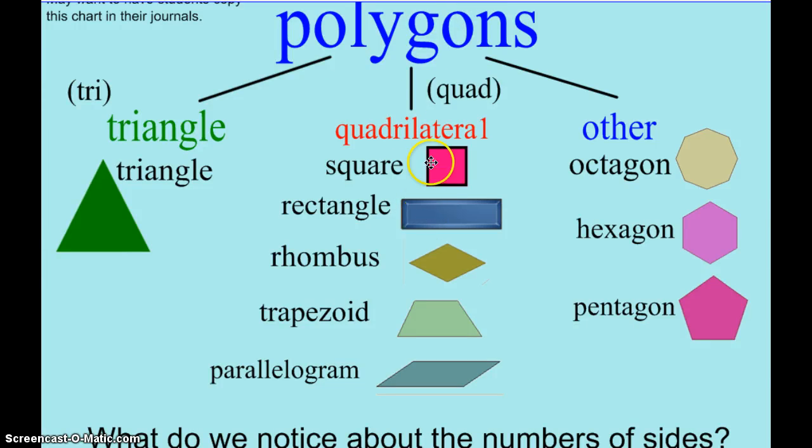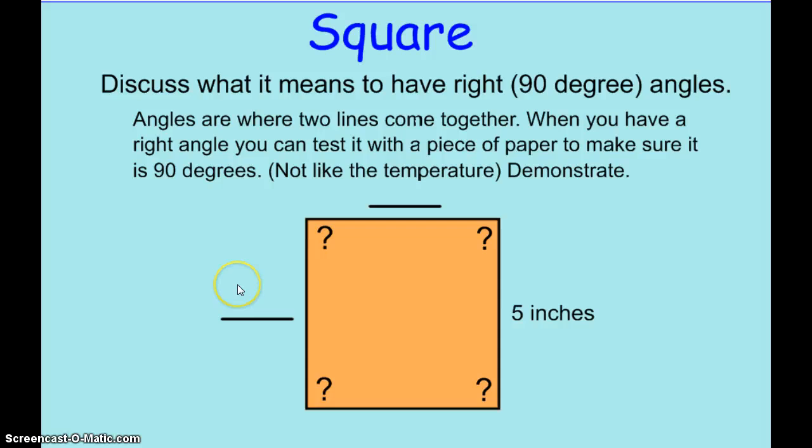If we notice the quadrilaterals, all of these have 4 sides. That's square, rectangle, rhombus, trapezoid, and parallelogram. In 3rd grade we're going to focus a lot on these and how we can compare and contrast them or find the similarities and differences between these shapes.